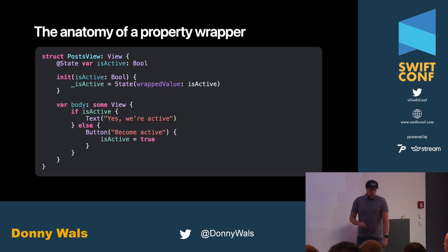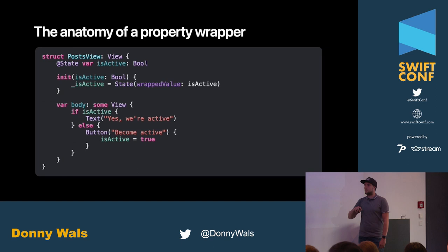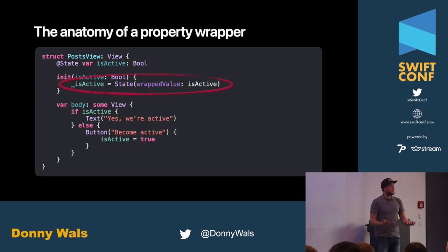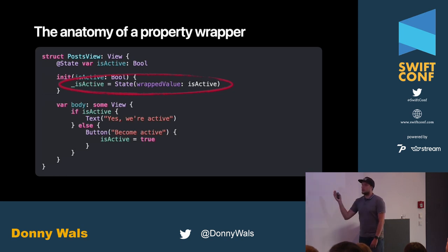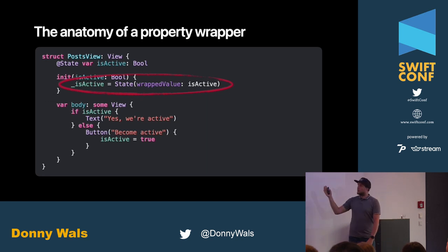You might have had to do this pattern when passing dependencies down to initializers. What this does is take the underscore-prefix version of a property — which is an instance of the @State type — and simply assign to it to create our state ourselves. So we don't have a default value, but it's non-optional, so we can just create an instance of the state wrapping the desired value.